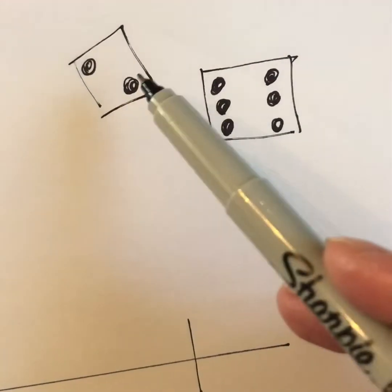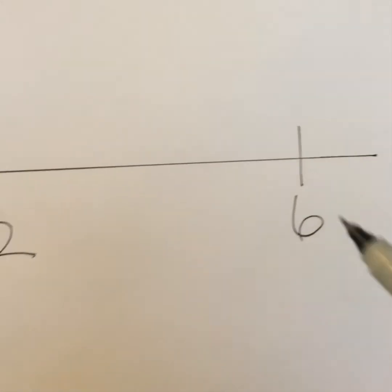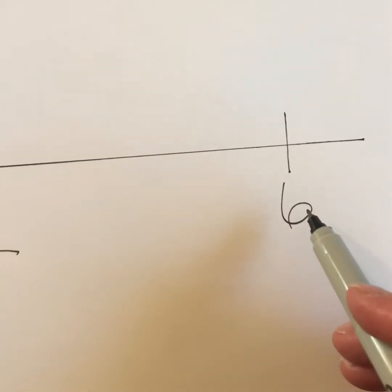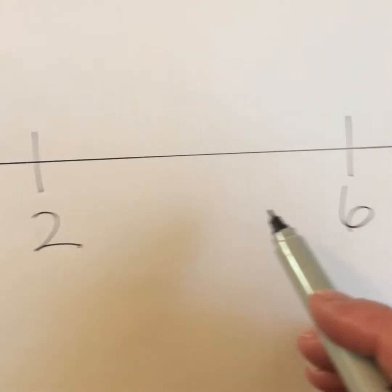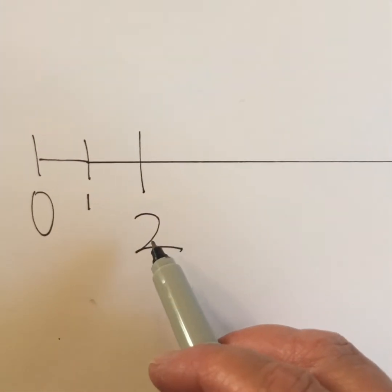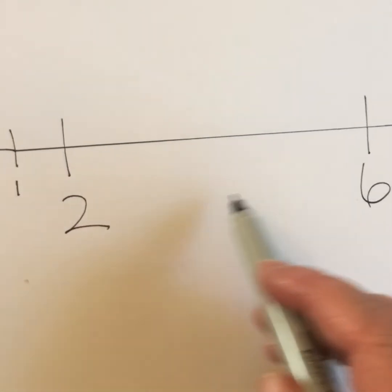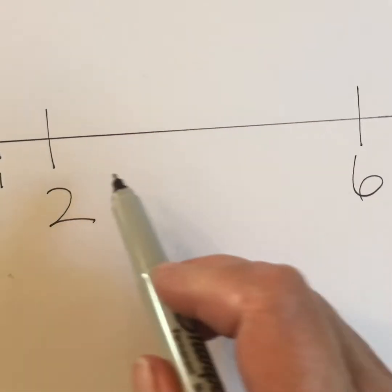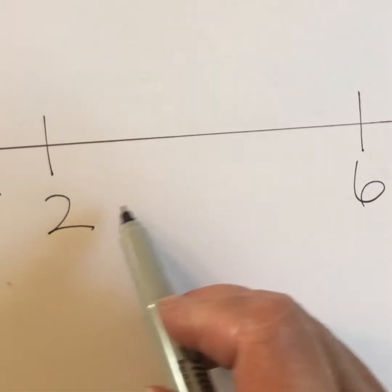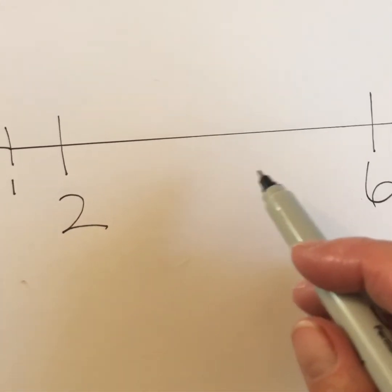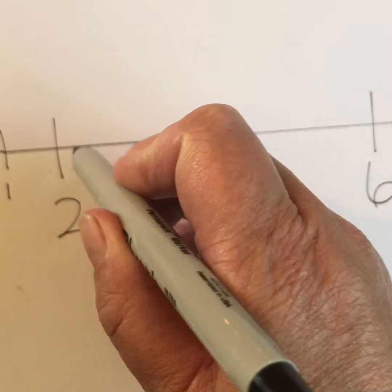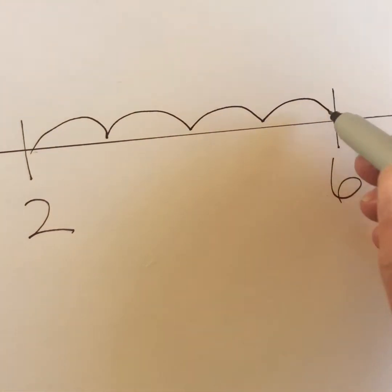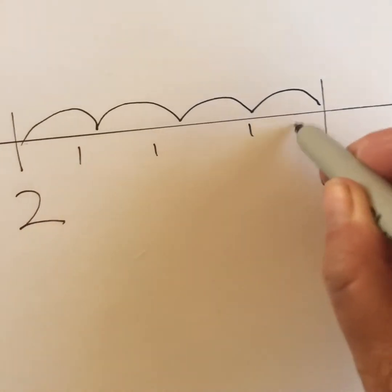If we rolled a two and a six, another way to think about finding the difference is using a number line. I've written six as the greater number and two as the lower number, and thinking about that space in between two and six — how many more is six? What is the difference, the space in between two and six? I could count up: two, three, four, five, six — which is one, two, three, four.